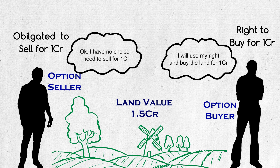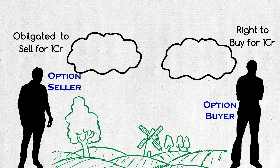So how much did Mr. Reddy spend to own the land worth 1.5 crores? 1 crore rupees — wrong. 1 crore rupees plus 10 lakh premium he spent, so 1.1 crores. Scenario 2 — highway not sanctioned, so the rate went back to its original price of 70 lakhs.